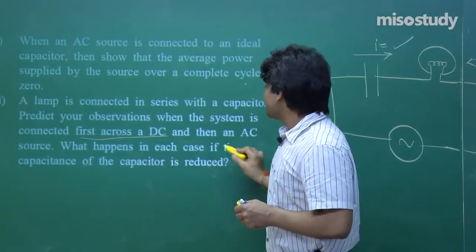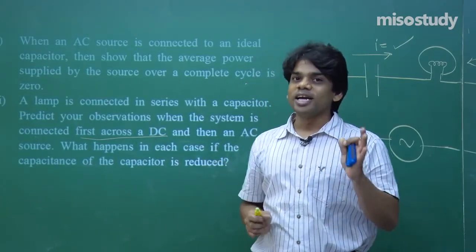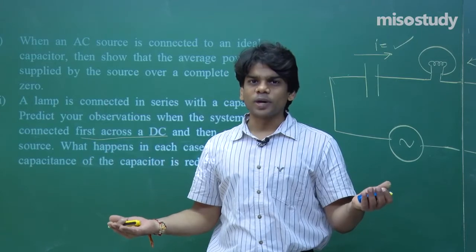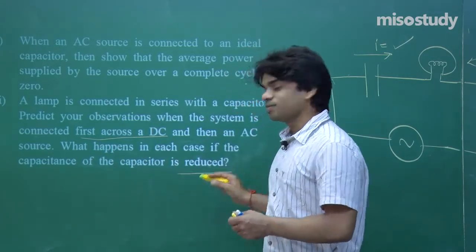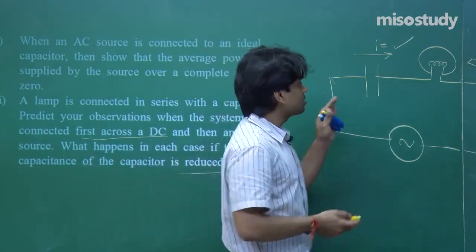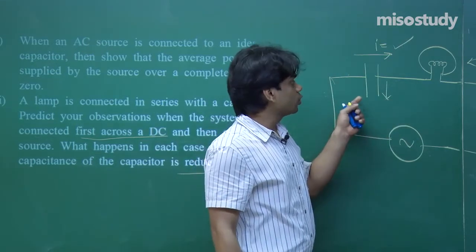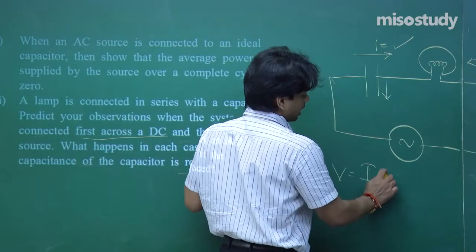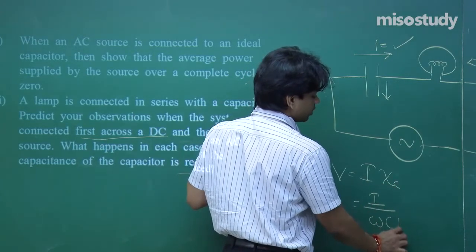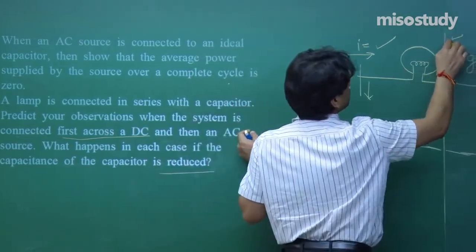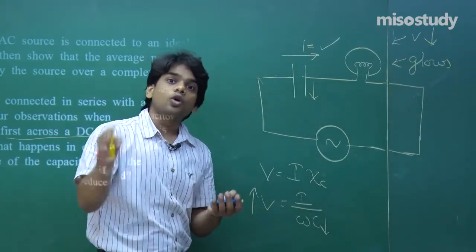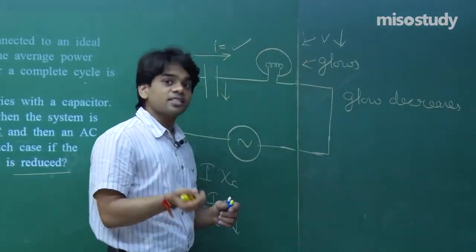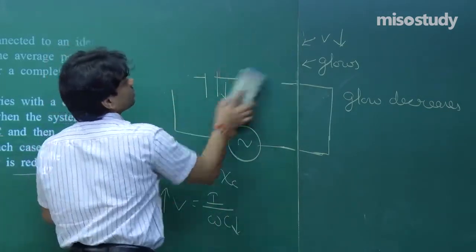What happens if the capacitance of the capacitor is reduced? In the DC case, no change — no current, no glow regardless. In the AC case, if the capacitor is reduced, V = I/(ωC) — as C decreases, voltage across the capacitor increases, so voltage across the bulb decreases. Hence the brightness decreases.